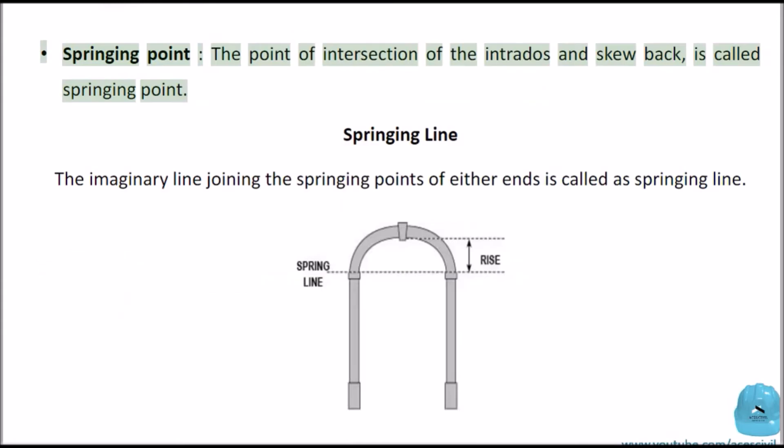Springing point: The point of intersection of the Intradose and skew back is called springing point. Springing line: The imaginary line joining the springing points of either ends is called a springing line.